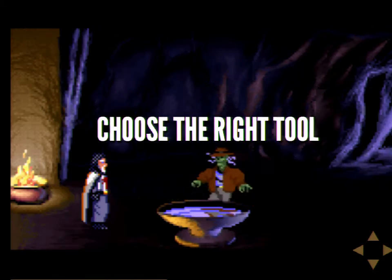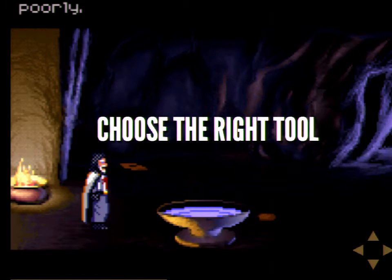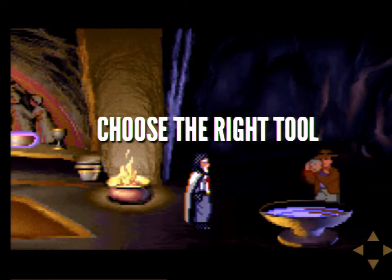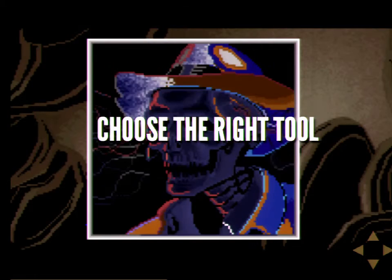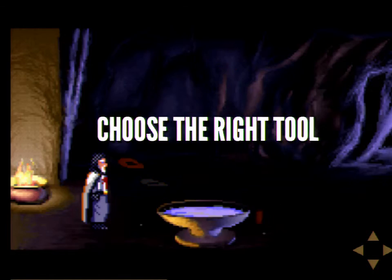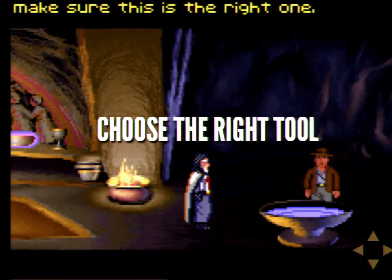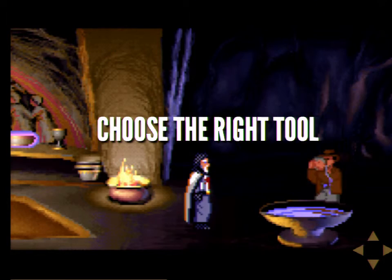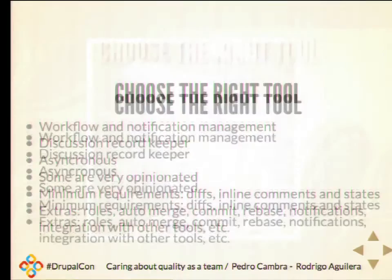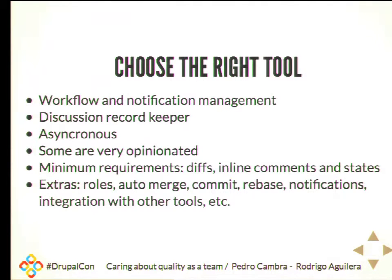For tools, we are going to give you some examples — what I am currently using. They mostly serve as workflow and notification management: when to do code review, when to merge. You have threads, discussions, and you can keep them and review them later to see what happened.